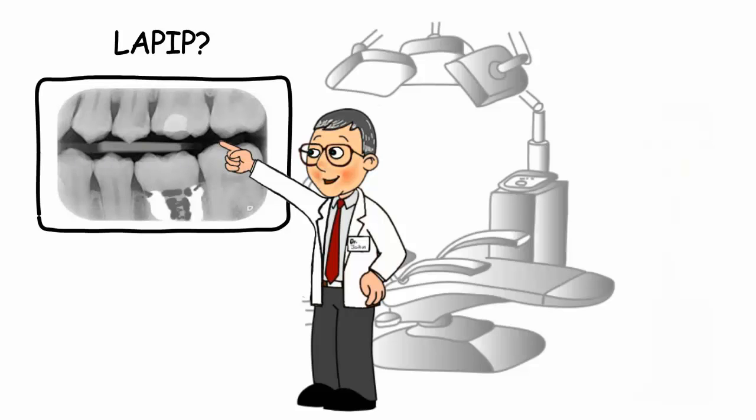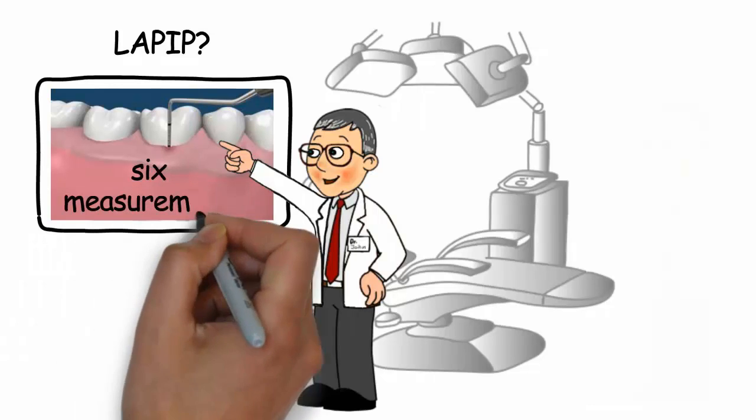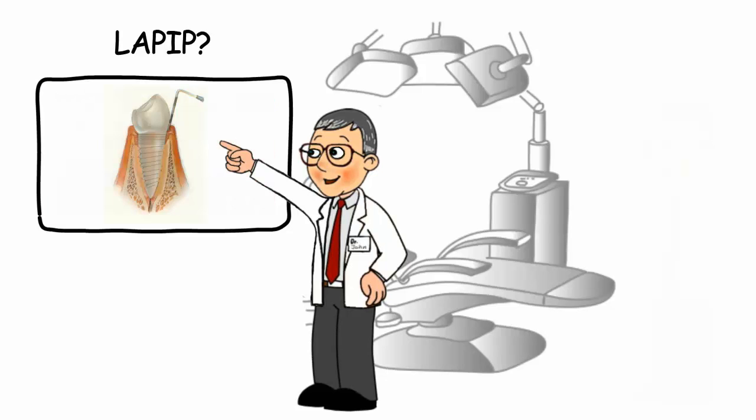Then, and this is critically important, they need to have your gums evaluated and six measurements per implant need to be made with a periodontal probe. The instrument is placed between your gum and your dental implant and a measurement is taken in millimeters.